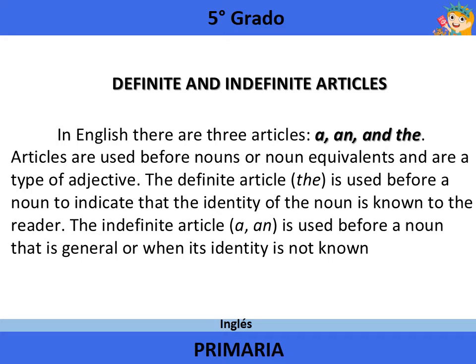The definite article THE is used before a noun to indicate that the identity of the noun is known to the reader. The indefinite article A or AN is used before a noun that is general or when its identity is not known.